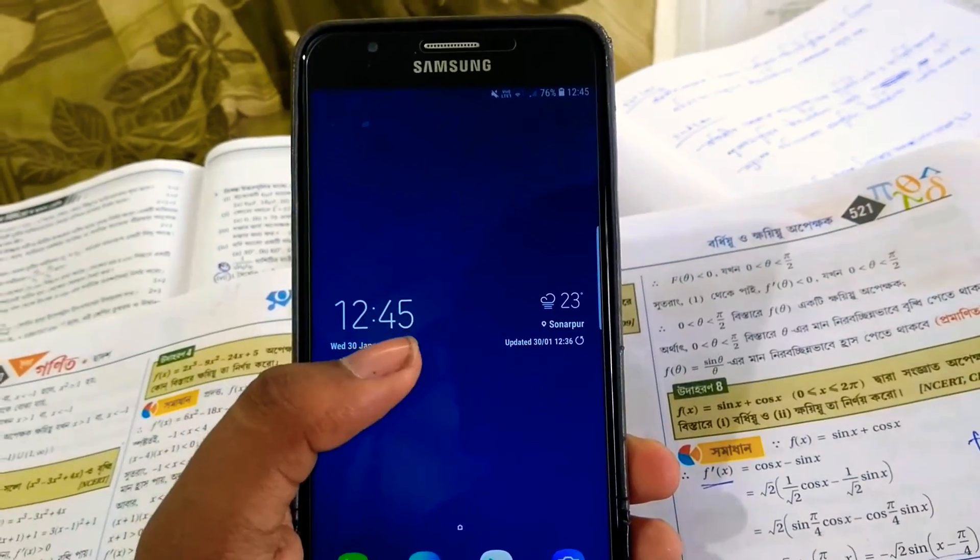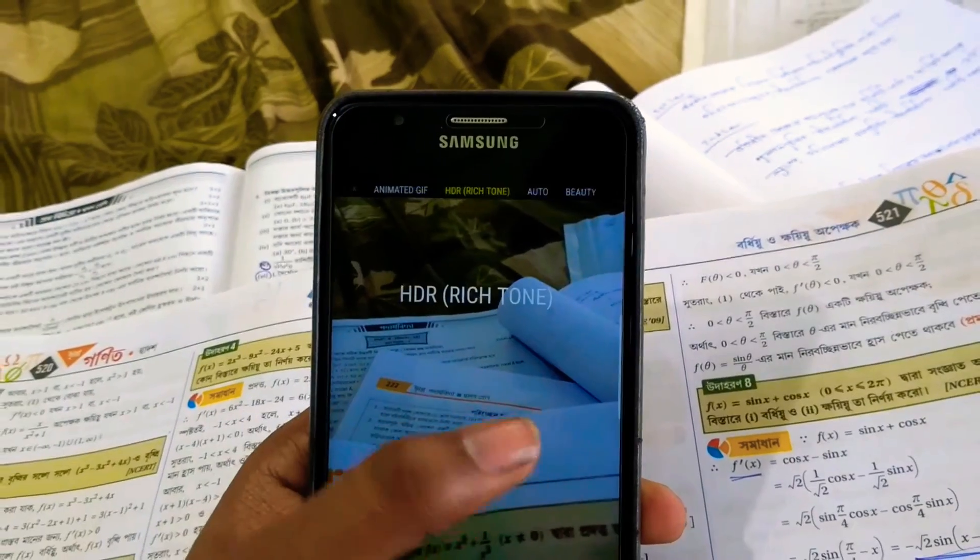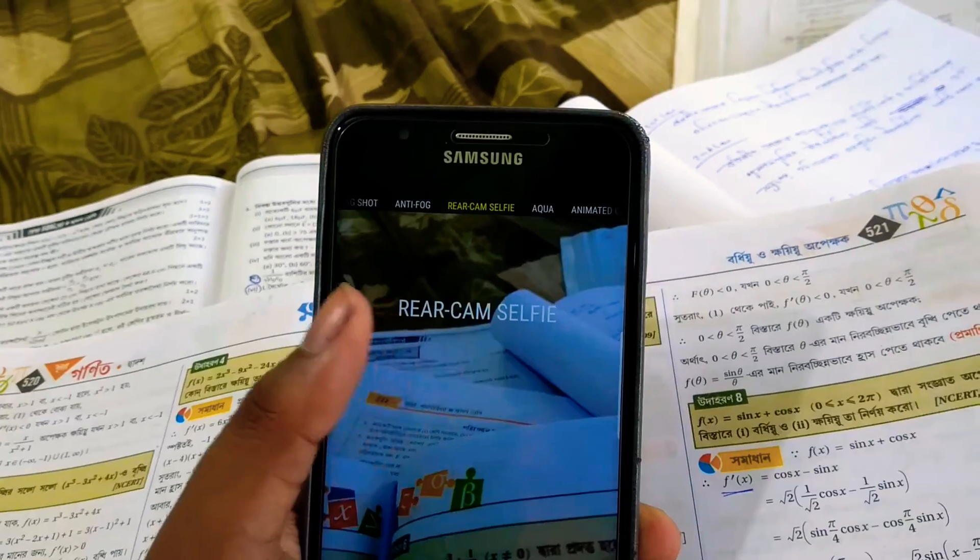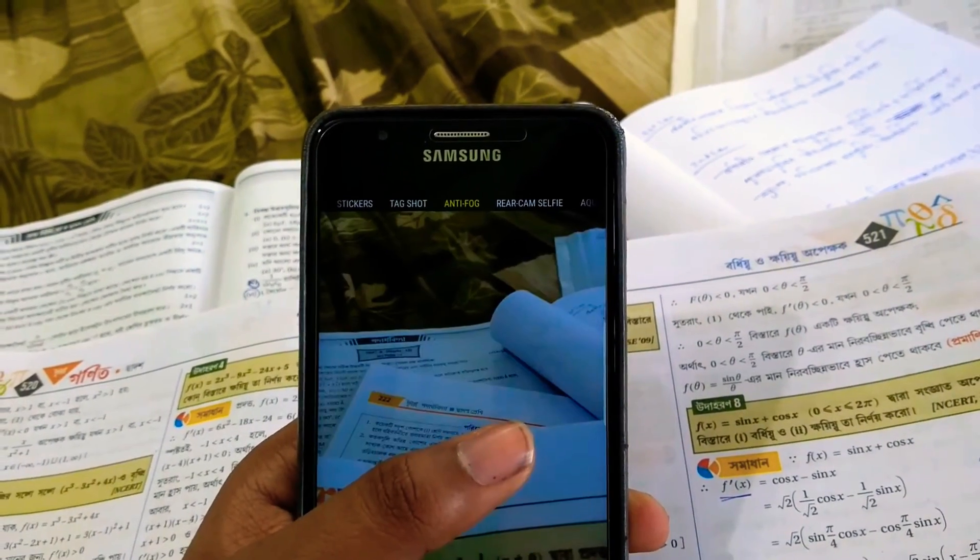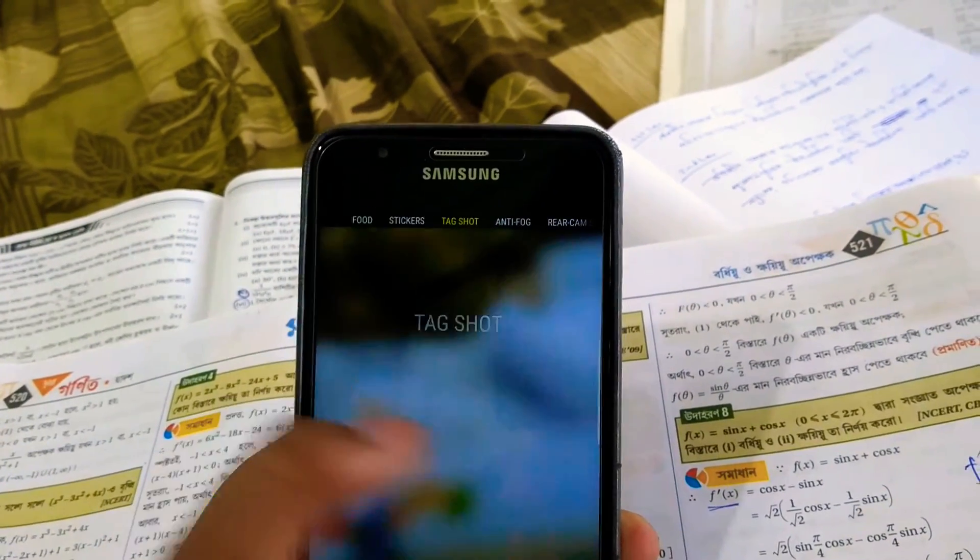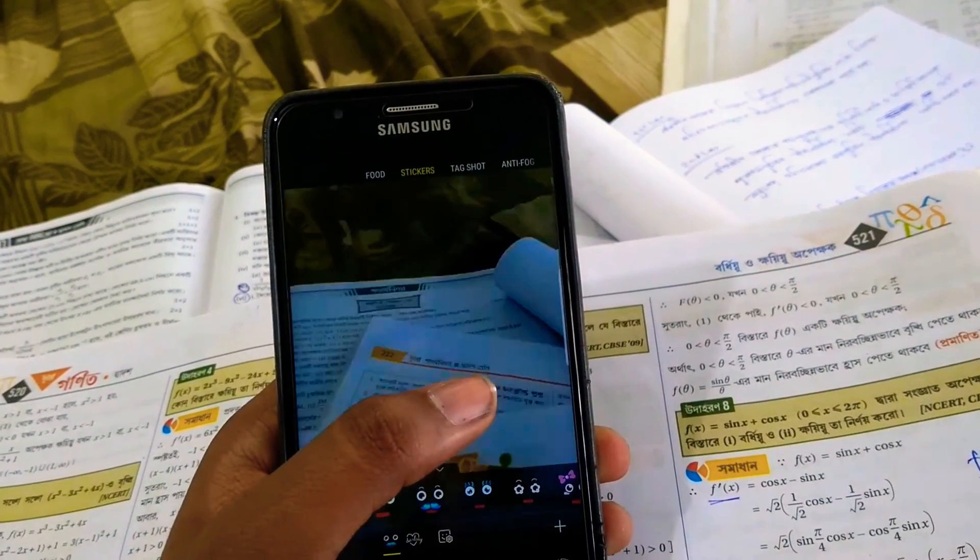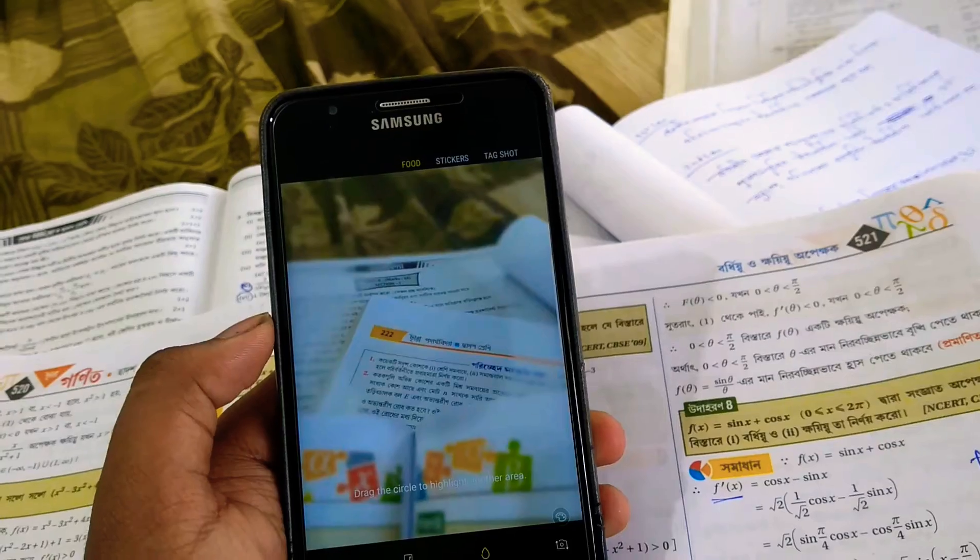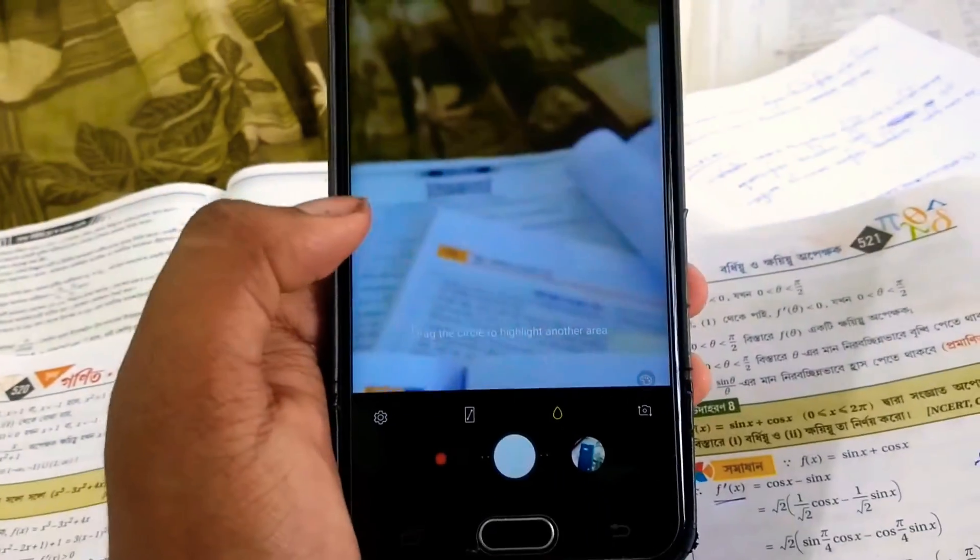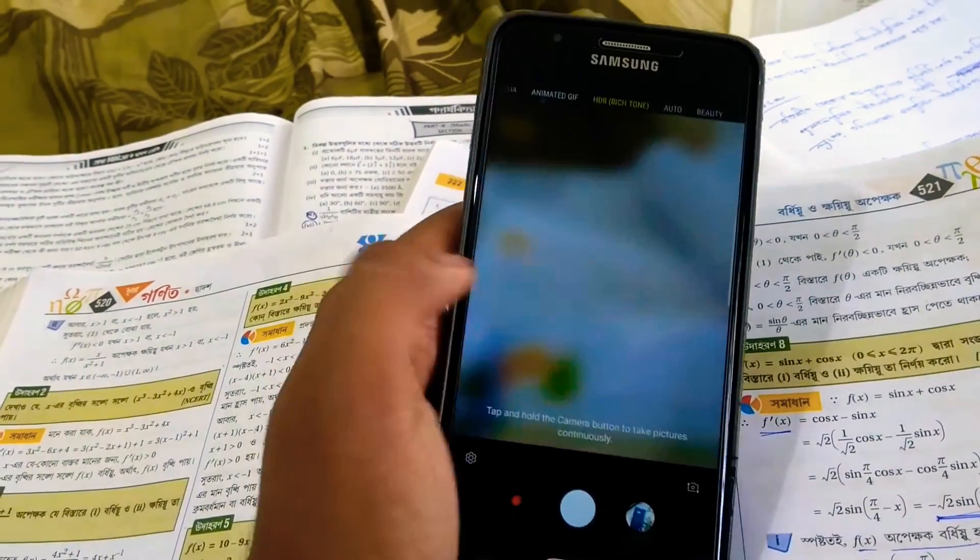Before going off, I want to show you the camera features. As you can see, that's the camera. You get all the modes like auto, HDR, animated GIF, rear cam selfie—that's a cool thing I would say because my front camera has some fog or broken parts inside so the camera is hazy. Tag shot, as you can see, that's tagging some stuff. Stickers and food—this kind of stuff just works. Food keeps the middle section focused.